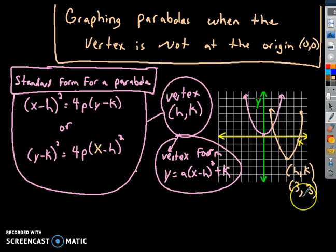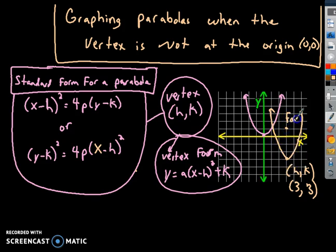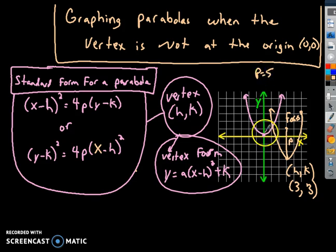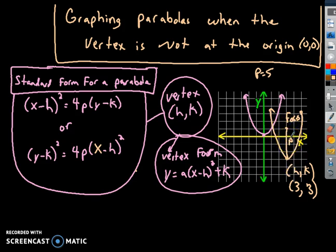If I know h and k, I can plug in those values for h and k. I also need to figure out what p is — p is still the distance to the focus. If my focus is here, this length is still the value of p. The difference now is that p may not match the value in the coordinate because it's relative to where the vertex is. The focus is p away from the vertex.